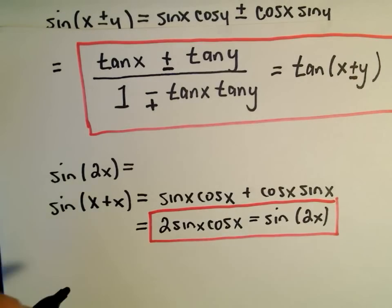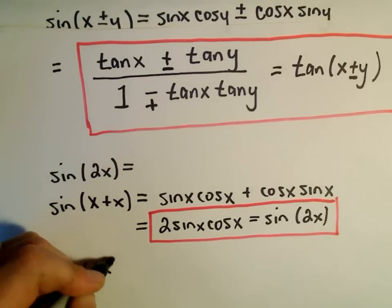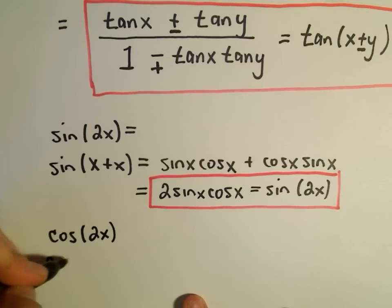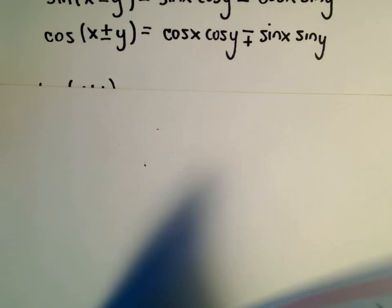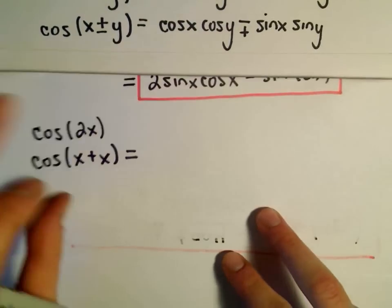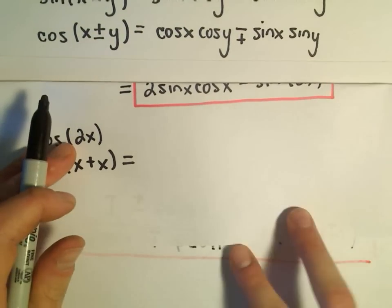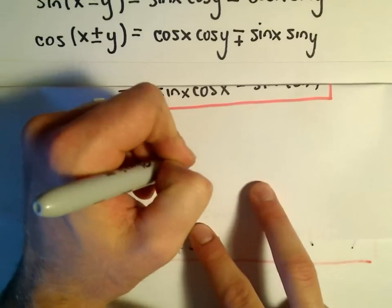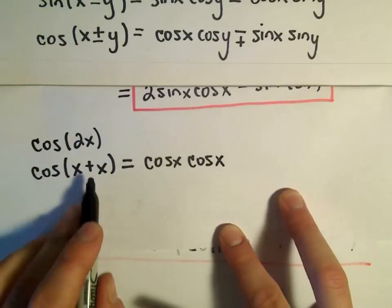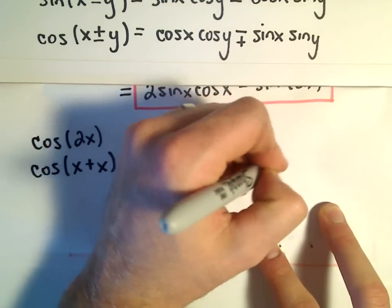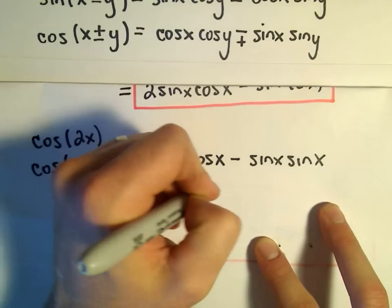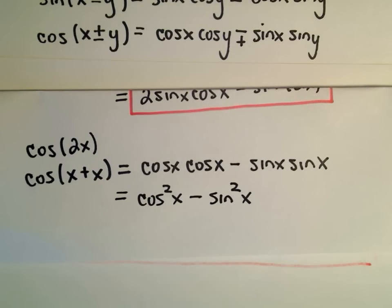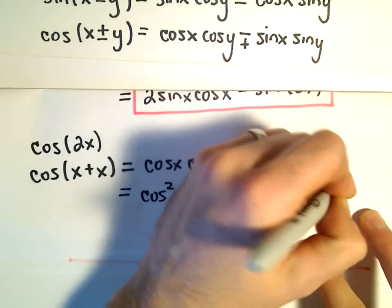Now let's look at cosine of 2x. We can write cosine of 2x as cosine of x plus x, and use our identity. Instead of x plus y we have x plus x, so that gives us cosine x times cosine x — and if it's a plus we use a minus — then minus sine x times sine x. We rewrite this as cosine squared x minus sine squared x. So there's another identity for cosine of 2x.